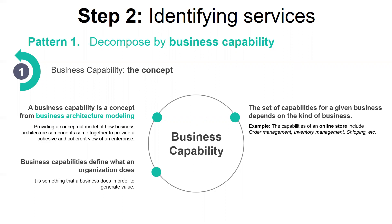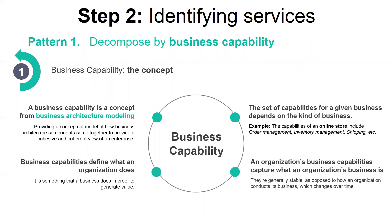For example, the capabilities of an online store include order management, inventory management, shipping, and so on. An organization's business capabilities capture what an organization's business is. They are generally stable, as opposed to how an organization conducts its business, which may change over time. For example, in banking, the deposit check business capability has remained stable, but the manner in which it is done has drastically changed. It wasn't that long ago you deposited checks at your bank by handing them to a teller, then it became possible to deposit checks using an ATM, and today you can deposit most checks using your smartphone.